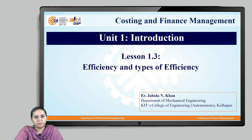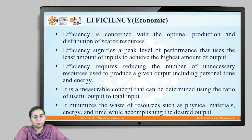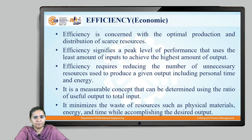In today's session, we will be starting with the efficiency and types of efficiency. When do we say that a system is efficient? We say that a system is efficient when it is able to give the desired amount of output with the available resources or with the optimum utilization of the available resources. Efficiency is a measurable concept which could be measured using the ratio of useful output to the total input.